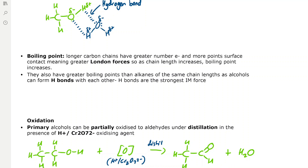The boiling points of alcohols: longer carbon chains have a greater number of electrons and more points of surface contact, meaning greater London forces. So as chain length of alcohols increases, the boiling point increases because the London forces require more energy to overcome.